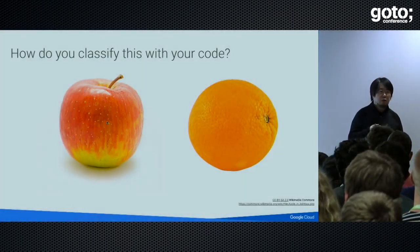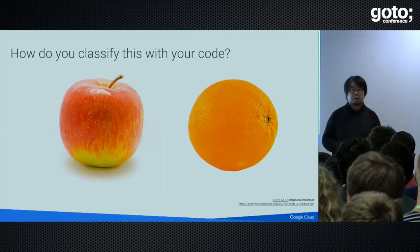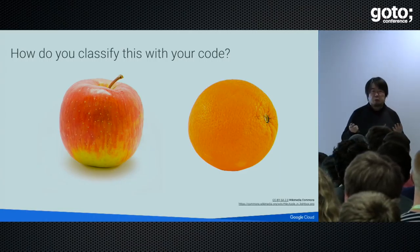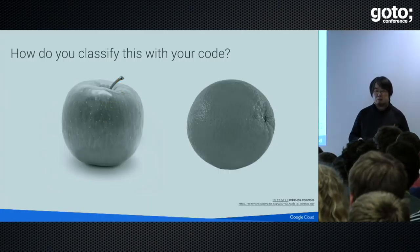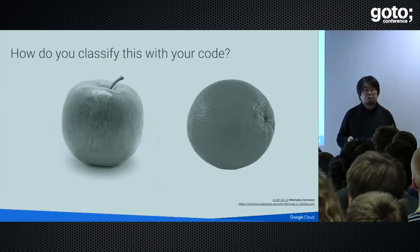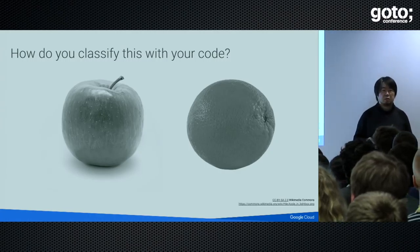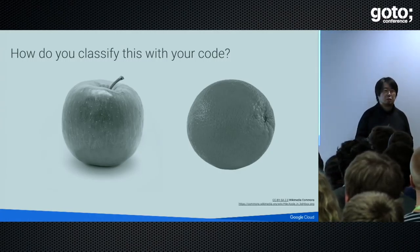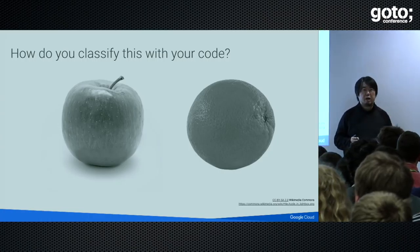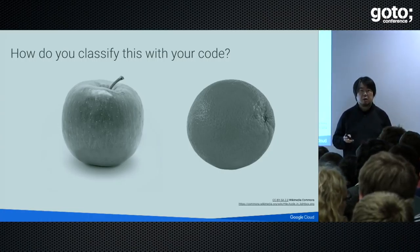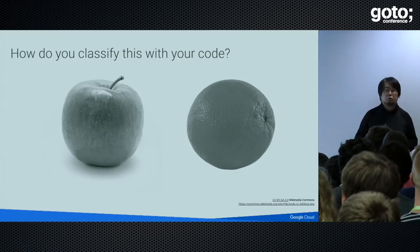But your customer comes back and says that in production systems, actually the performance of the camera is not so great. So you would get a monochrome image. What kind of program code would you write to classify these fruits? In this case, you cannot rely on the color of pixels.